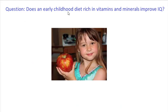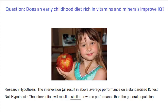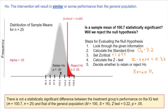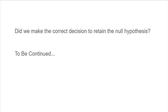Let's come back to our research question: does an early childhood diet rich in vitamins and minerals improve IQ? The research hypothesis says the intervention will result in above-average performance on a standardized IQ test; the null hypothesis says no difference or in the opposite direction. We went through our five steps: look at given information (population mean and standard deviation, sample mean and sample size), calculate the standard error, set the Z critical at alpha = 0.05, calculate the Z test, and decide whether to retain or reject the null. We decided to retain the null hypothesis — that a specialized diet high in vitamins and minerals will have no impact on standardized IQ performance.